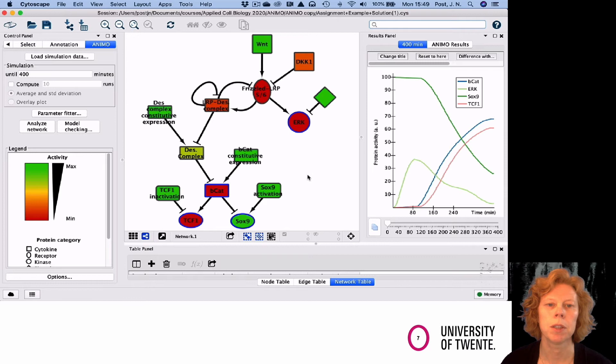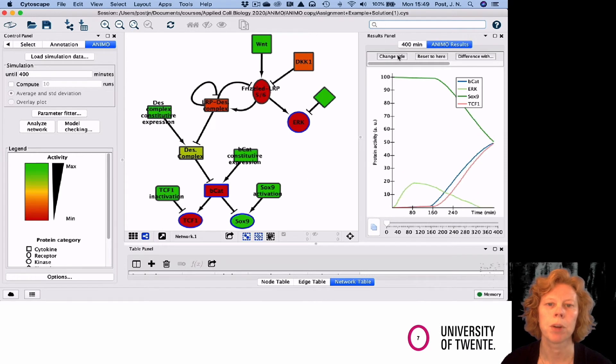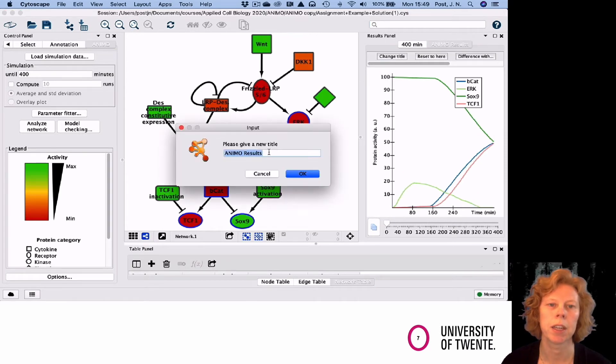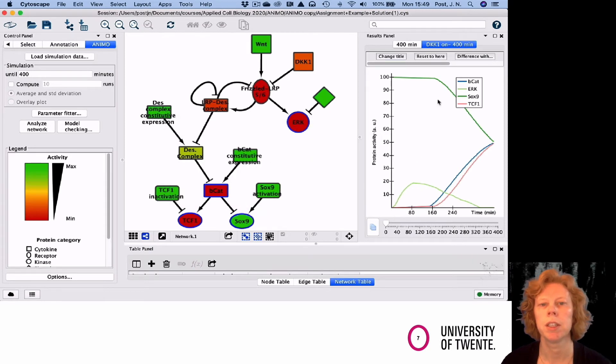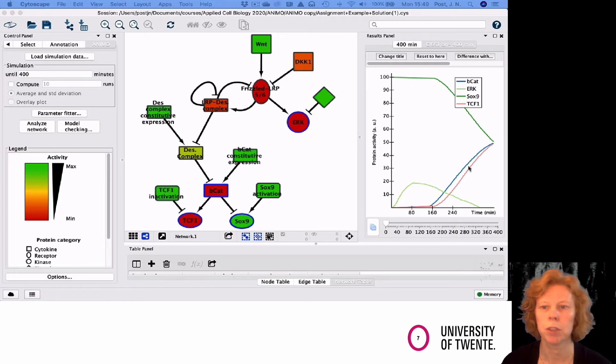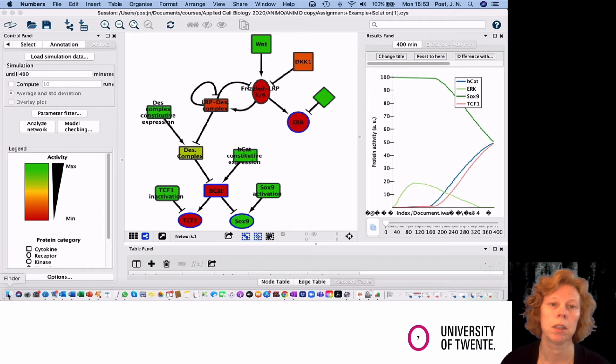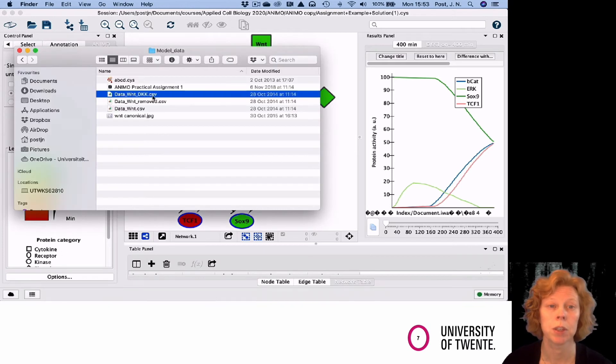Now in the simulation, I want to compare these data with the data in my wet lab file. What I first want to make sure is that all the data that I want to change, all the nodes that I want to optimize, are plotted in my graph. If they are not, then you can do that by enabling them in the node, in the network.